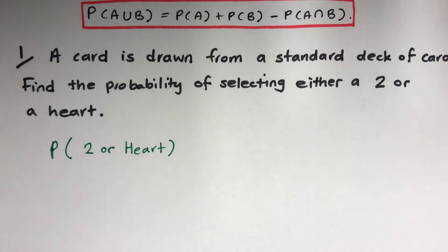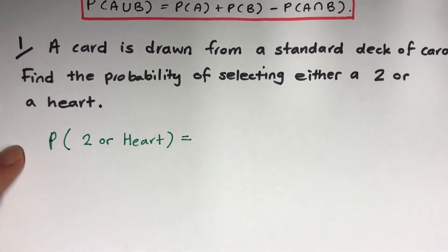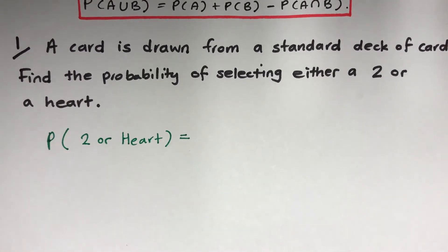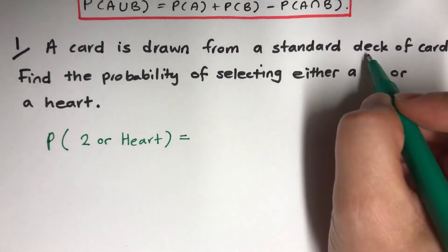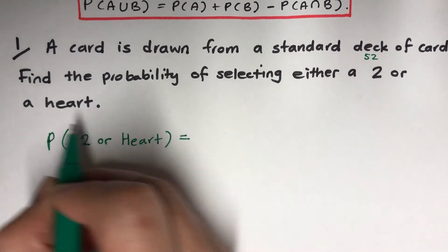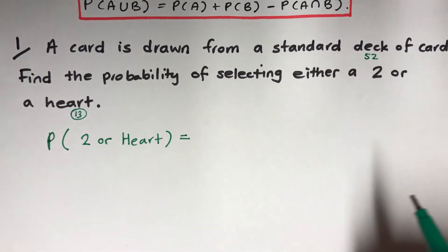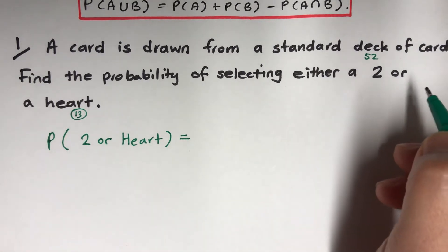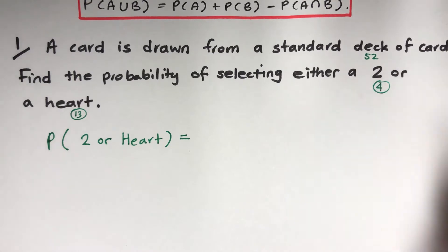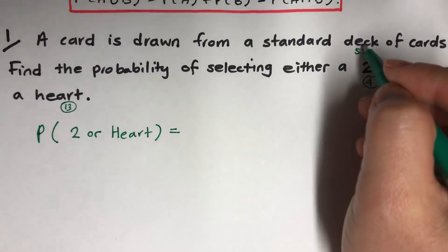We read the question, we understood, and now filter it by collecting all the information. We've got 52 cards in a deck. For hearts, there's 13 of them, and for twos, there's 4 because there are four suits, so there will be four twos in there.